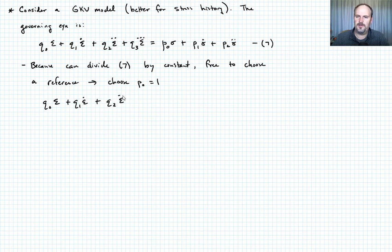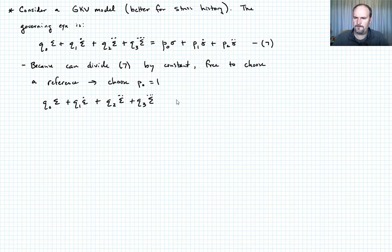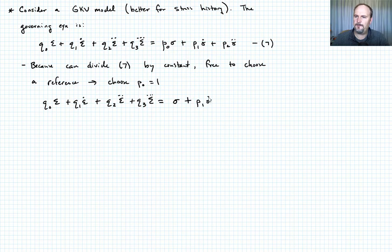So our governing equation then looks like Q naught times epsilon plus Q1 times epsilon dot plus Q2 times epsilon double dot plus Q3 times epsilon triple dot equals sigma plus P1 times sigma dot plus P2 times sigma double dot. Let's call that equation eight.